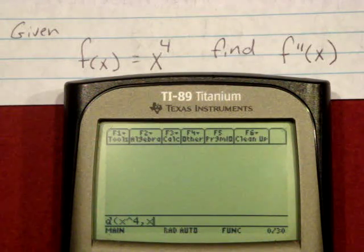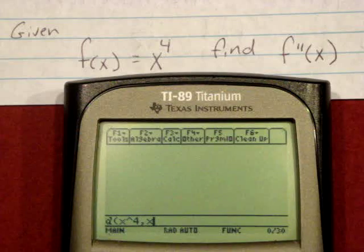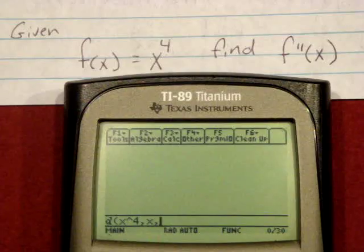And then you're going to have to tell the calculator which derivative you'd like, second, third, in this case we would like the second, so we'll enter in comma 2.